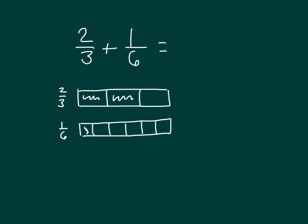However, I can rename two-thirds if we take each third and break it apart into two equal parts. We have renamed two-thirds then as four-sixths.